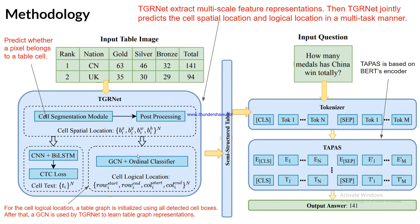For cell logical location, the bounding box information is used with a Graph Convolutional Network (GCN) with an ordinal classifier. The table graph is initialized using all detected cell boxes, and then the GCN is used by TGRNAT to learn the table graph representation. Once the table graph representation is learned it is converted into a semi-structured table form, and the next task is question answering over that table.